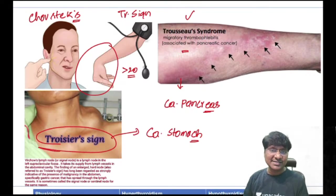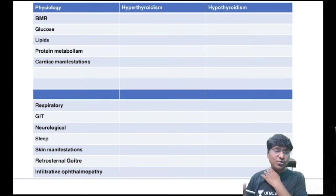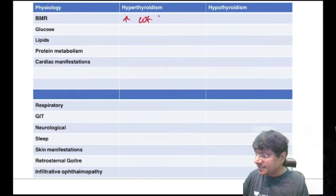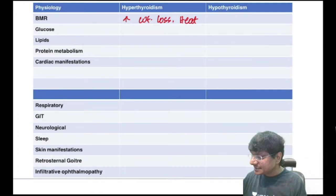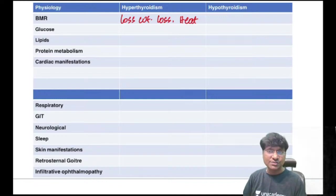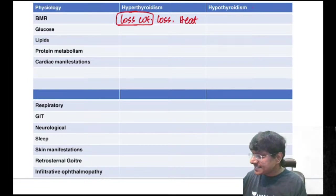Thyroid disorders: comparing hyperthyroidism vs hypothyroidism. In hyperthyroidism, basal metabolic rate is elevated — causing weight loss and heat intolerance. In hypothyroidism, BMR decreases — causing weight gain and cold intolerance. In hyperthyroidism, hyperglycemia occurs after food; in myxedema coma, hypoglycemia develops.